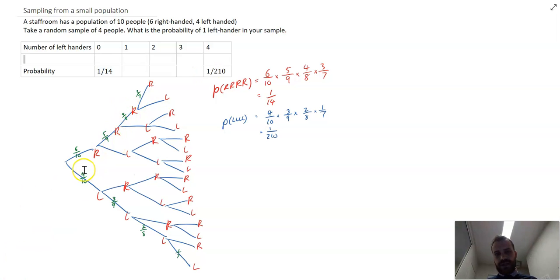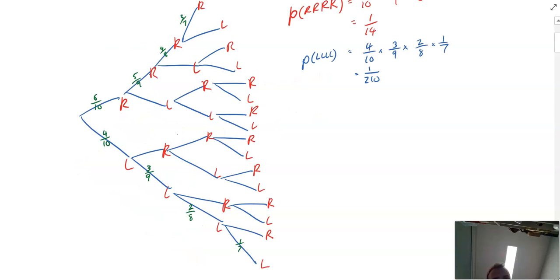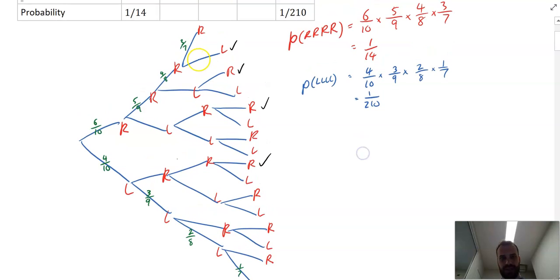Life gets more complicated for the other ones, so if I want one left-hander, I need to consider my tree diagram a little more carefully. One left-hander can exist on this thing here, on this one here, on this one here, and on this one here. So I'd have to consider all four of those. Let's just consider one first of all, six in ten, five in nine, four in eight, and the last one is going to be four in seven. So that's the probability of RRRL.